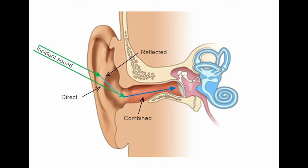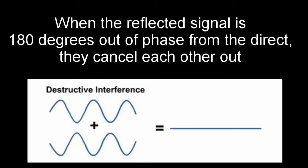As incidental sound waves enter our ear canal, some sound waves may be small enough in length to be reflected off of an ear fold. When this occurs, it causes a time delay due to the small increase in distance of the reflected sound and the direct sound. The result is destructive interference of the original signal, which the brain may interpret as a localization cue.